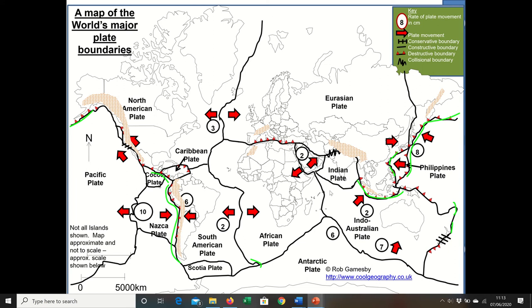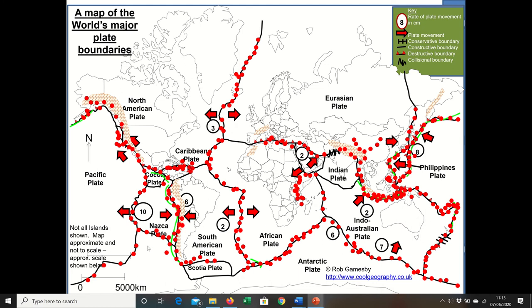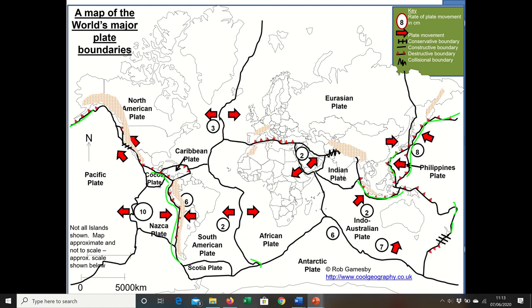Where the arrows go together in similar sort of directions or opposite directions that's a conservative plate margin. The plates are sliding past one another. The green lines there represent your trenches. The squiggly lines here represent fold mountains so those are new fold mountains where two plates collide. We tend to get a range of mountains.